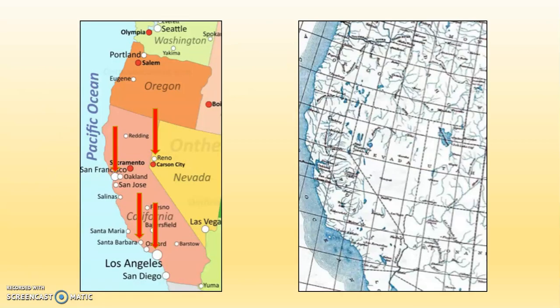Let's look. Okay, if we look at the map on the left side, you can see those four red arrows are indicating those four cities: Los Angeles, Santa Barbara, San Francisco, Reno.